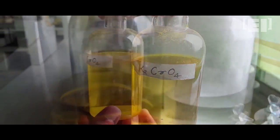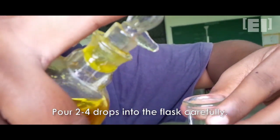Now drop two to four drops of freshly prepared potassium chromate carefully into the flask.